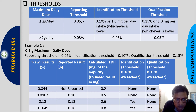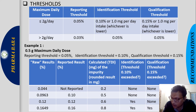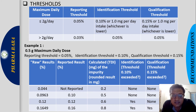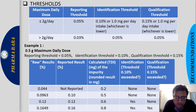Now let's check which impurities exceed the identification threshold of 0.10%. For 0.5 grams per day: 0.5 g × 0.1% = 0.5 mg, which is less than 1 mg, so 0.10% is the identification threshold. The first impurity (not reported) and second (0.10%) do not exceed the identification threshold. The third impurity at 0.12% and fourth at 0.16% exceed the identification threshold — for these two, structure identification is required.